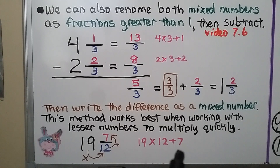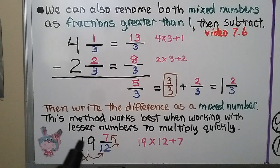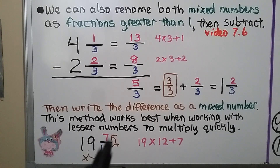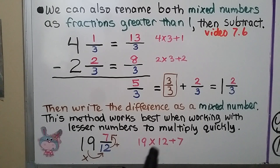19 times 12 plus 7 cannot be done that quickly, so it would be better to rename it as 18 and change it into a lesser whole number with a fraction greater than 1 rather than using this method.